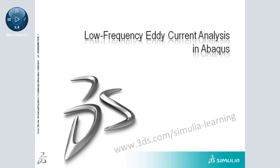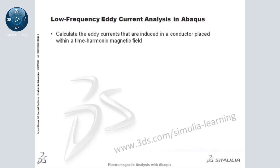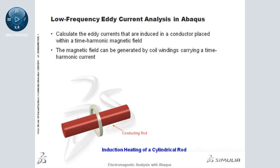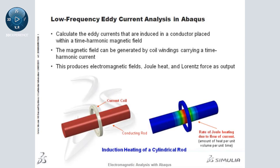The low-frequency eddy current analysis capability in Abaqus allows you to calculate eddy currents that are induced in a conductor placed within a time-harmonic magnetic field. The magnetic field can be generated by a coil carrying a time-harmonic current at a known frequency. This modeling technique is used in this example of a conducting rod surrounded by a current coil. The time-harmonic current through the coil generates a magnetic field, which induces currents in the conducting rod.